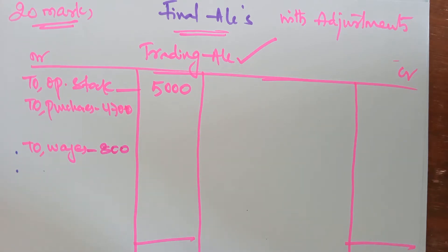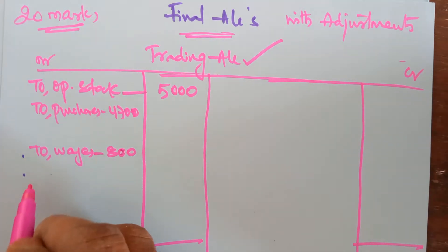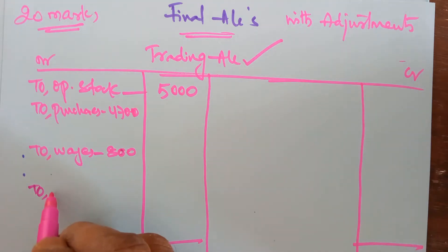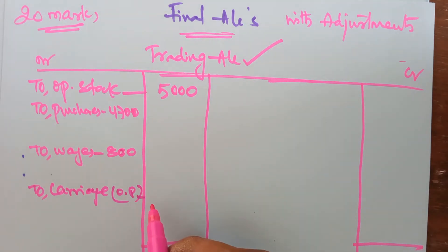The next item is carriage. Carriage is just another name for transportation and is also an expenditure. You have to decide whether it is direct or indirect. Carriage on purchases becomes a direct expenditure, so take it to the outer column.